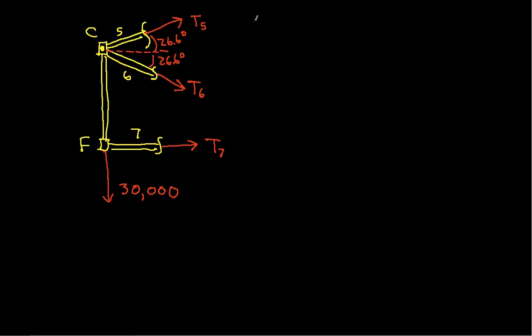So, we have the sum of the moments about point C are equal to 0. Well, the only moment about point C is T7. It has a moment arm here of 12 feet. So, we have T7 times 12 feet is equal to 0, which means that the tension in member 7 is 0. Wasn't that easy?